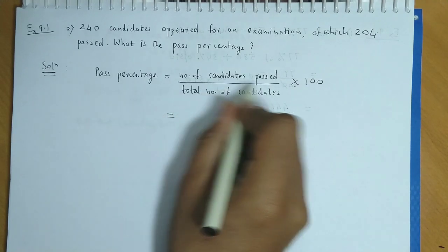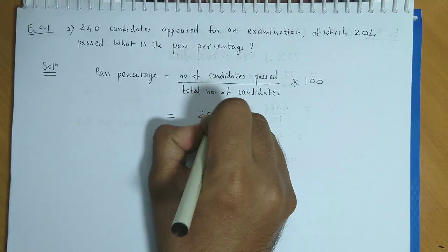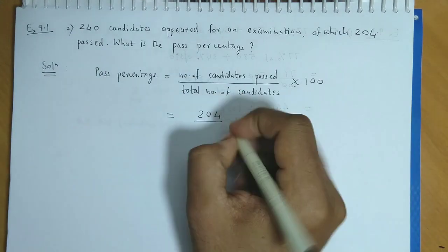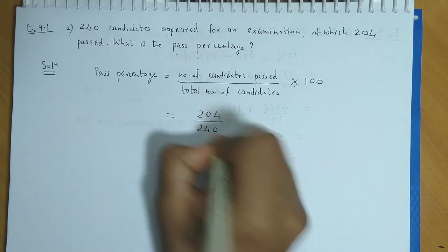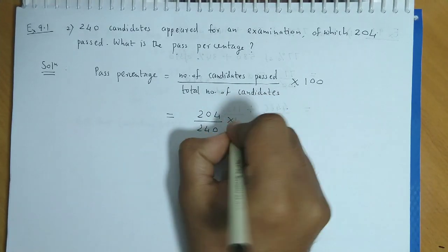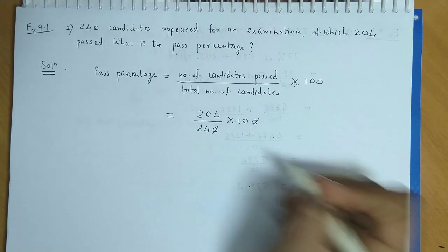The number of candidates passed is 204. Total number of candidates is 240 into 100. Now, we cut 1-0.